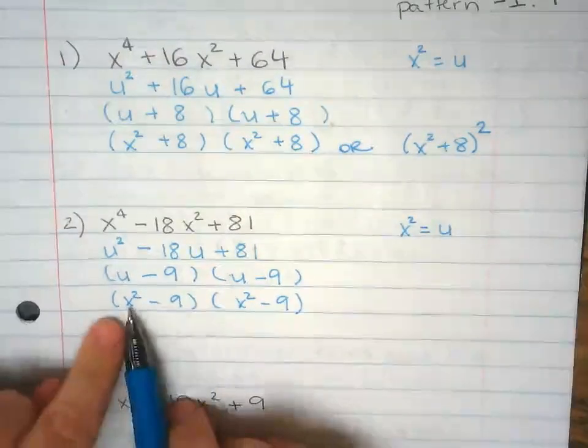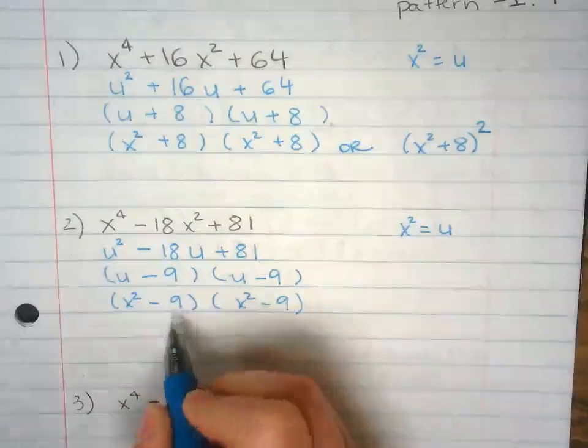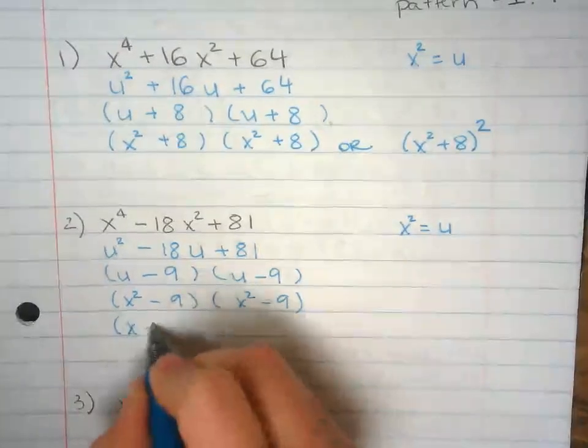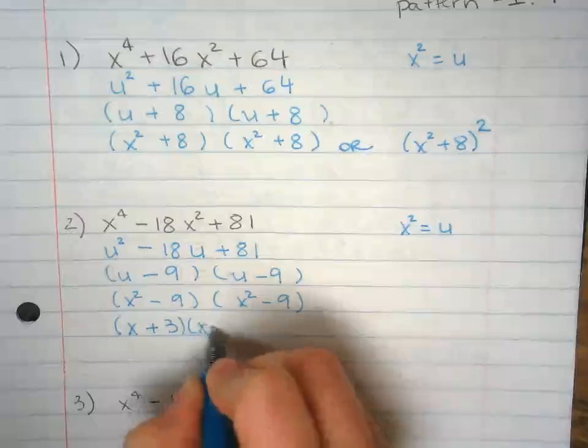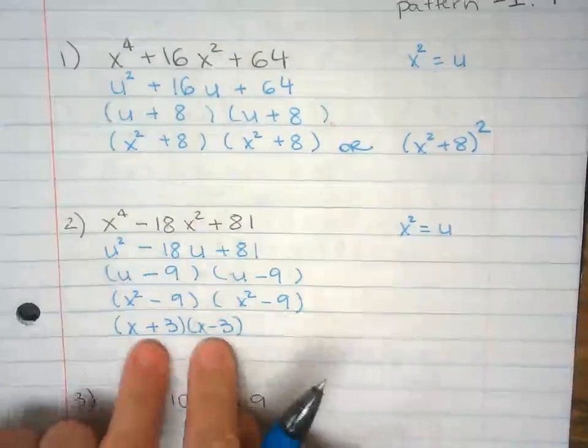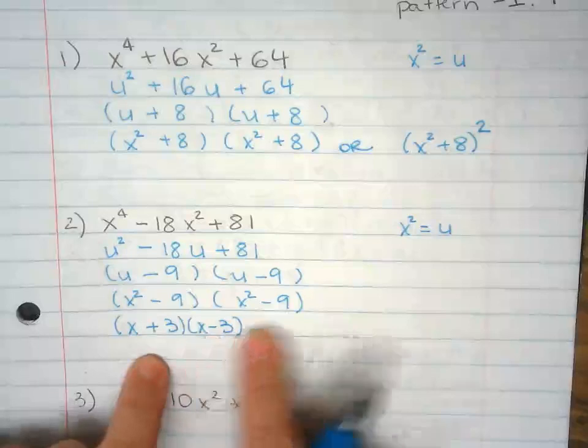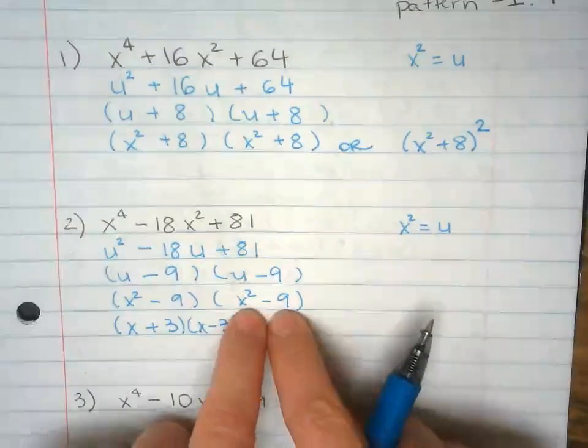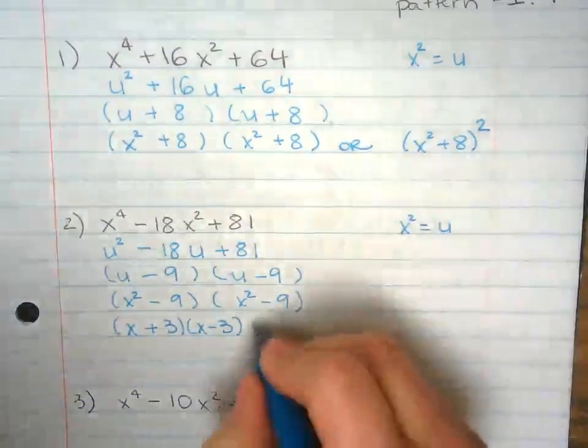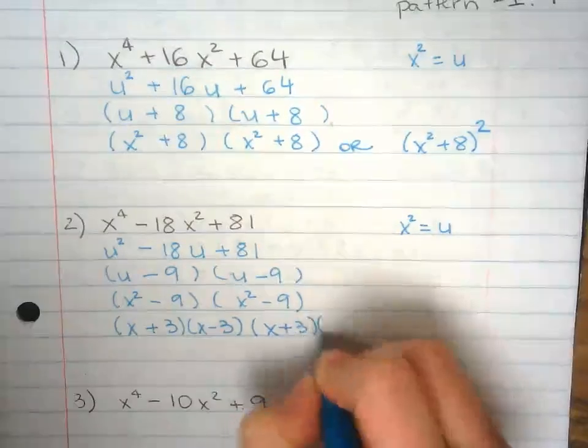So I'm going to have to factor this out. x plus 3, x minus 3. These two terms belong to x squared minus 9. Now I'm going to have to factor the other part too. x plus 3, x minus 3.